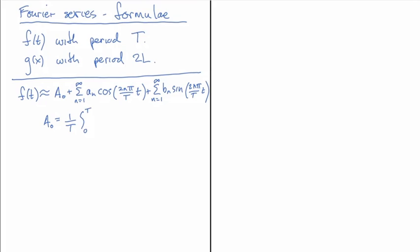I'm thinking about using this to solve an initial value problem where t equals 0 is somehow an important point. So we're going to take the integral of f(t) to get A0.